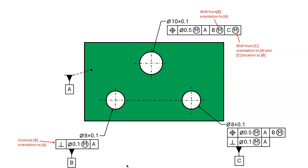Now we look back at the feature control frame for our considered feature and we notice that the datum C reference also has an MMB modifier. Therefore, we can have shift at datum feature C. When we look to the left of the datum C reference and look at the higher precedence datums, we see that datum feature A is primary and datum feature B is secondary. Therefore, our shift calculation must include a geometric tolerance that controls the orientation of datum feature C relative to datum A and the location of datum feature C relative to datum feature B. We look at datum feature C and we see that it has a tolerance of position that controls the orientation relative to A and the location relative to B. We must include this tolerance of position in our calculation for shift at datum feature C.